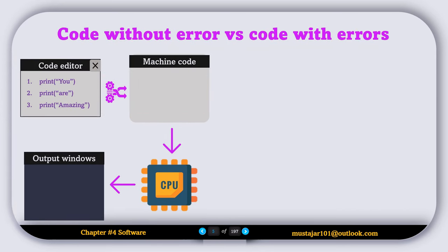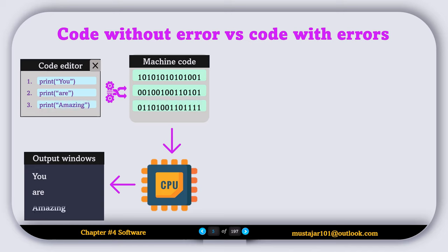Now let's understand how the interpreter translates code without errors. The interpreter reads the first line, converts it to machine code, and passes it to the CPU. The CPU executes the machine code and you see the output. The interpreter then reads the second line, translates it to machine code, forwards it to the CPU, and the output is displayed. The interpreter reads the third line, converts it to machine code, sends it to the CPU, and the CPU executes it. That's the process when there is no error.